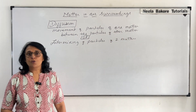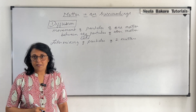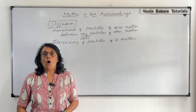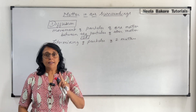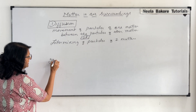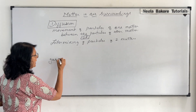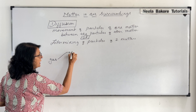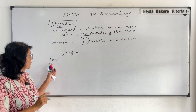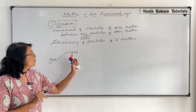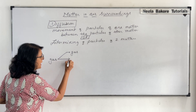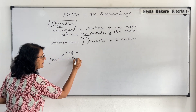Let us take some examples to understand how diffusion takes place. Suppose the particle of matter is of one state — say a gas particle moving in another matter that is gas, or gas particles moving in liquid matter.